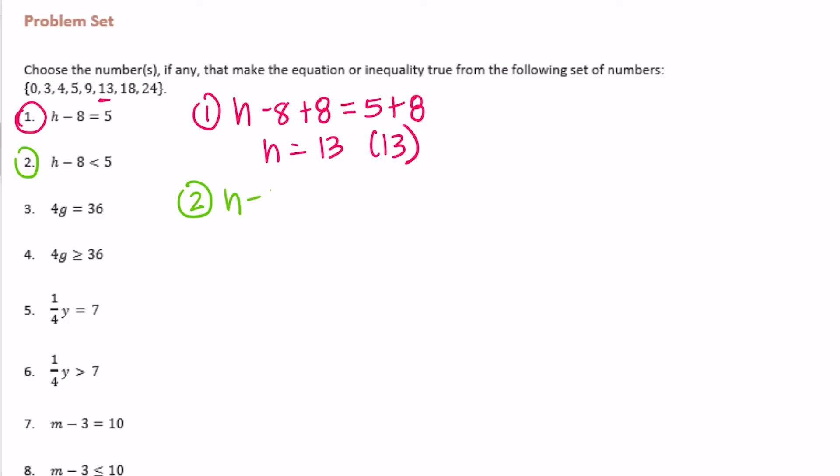Number 2: h minus 8 plus 8 this time is less than 5 plus 8, so h is less than 13. Let's look at the choices. Anything less than 13 would be 0, 3, 5. Not 13 because it's not equal to 13, it is less than 13. So the ones that would make this true would be 0, 3, 4, 5, and 9.